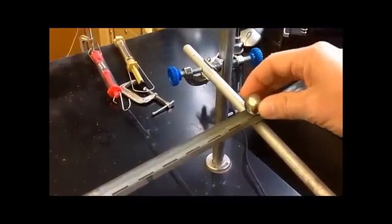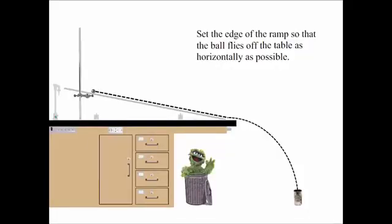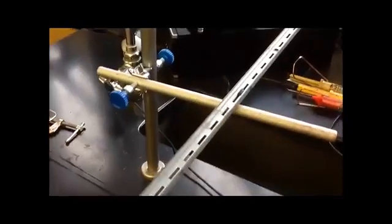The ramp needs to be positioned properly on the table. If the ramp is too close to the end of the table, the ball will roll down and you'll totally miss the table itself. That means it's going to roll down at an angle. You want the ball to fly off as horizontally as possible, which means you want to shift the ramp back a little bit.